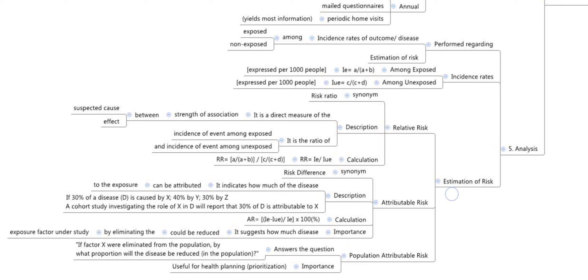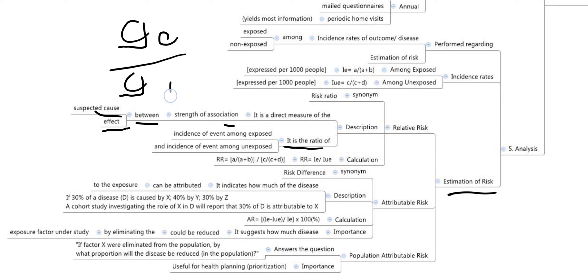Moving on to estimation of risk. We have relative risk, attributable risk, and population attributable risk. Relative risk is a direct measure of the strength of association between the suspected cause and the effect. It is calculated as the ratio of incidence among exposed divided by incidence among non-exposed: [a / (a + b)] / [c / (c + d)].